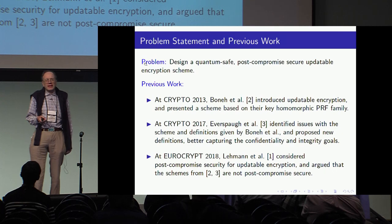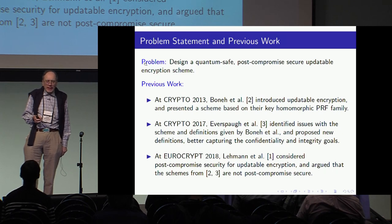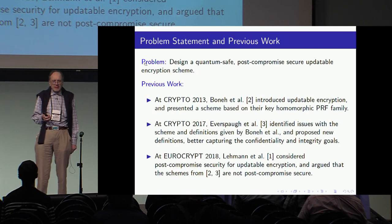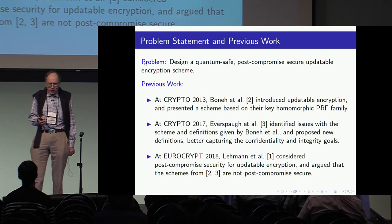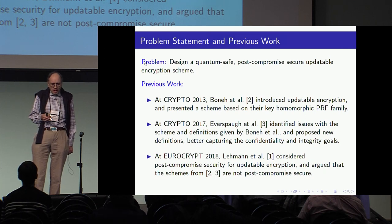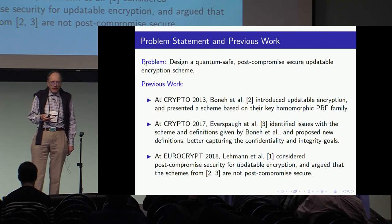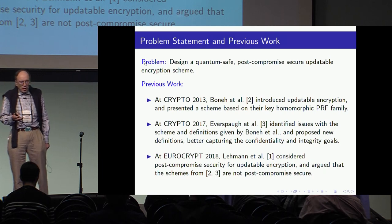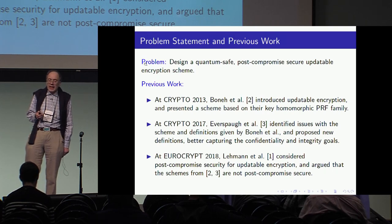Let me first explain the problem and previous work. At Crypto 2013, Dan Boneh and his co-authors introduced updatable encryption and presented a scheme based on their homomorphic pseudorandom function family. At Crypto 2017, issues were identified with the scheme and definitions given by Boneh et al. were discussed, and new definitions were proposed that better capture the confidentiality and integrity goals.